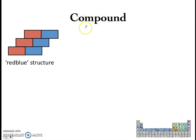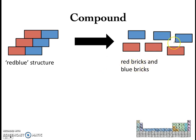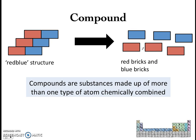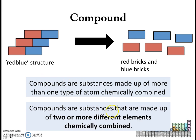Now let's move on to compounds. Compounds are a little bit like this structure here, which I've called the Rebleu structure. If you take this Rebleu structure and break it down, you'd get a mixture of red colored bricks and blue colored bricks — no longer only one type of brick, there's now more than one type. So compounds are substances that are made up of more than one type of atom, chemically combined. This is similar to the textbook definition: compounds are substances that are made up of two or more different elements, chemically combined.